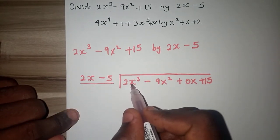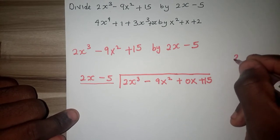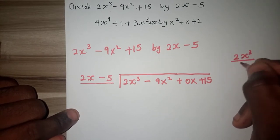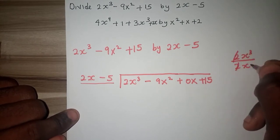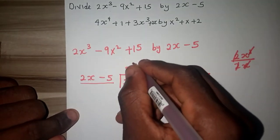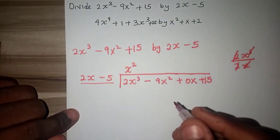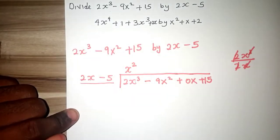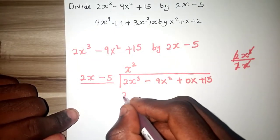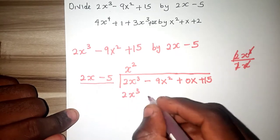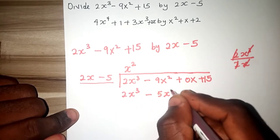2x divided by 2x cubed, that will just be 2x cubed over 2x. This will cancel this, this will cancel the remaining, x squared. What is the next thing to do is, let's multiply, 2x cubed minus 5x squared.